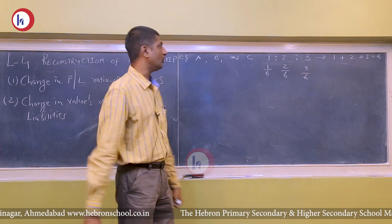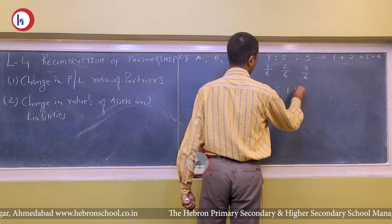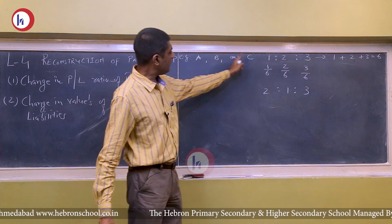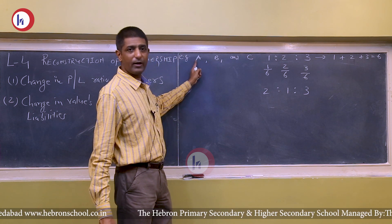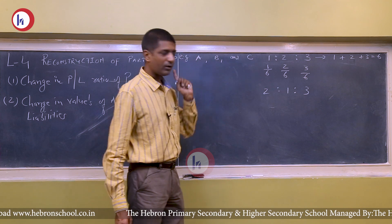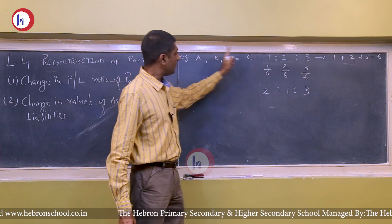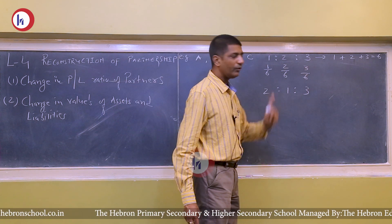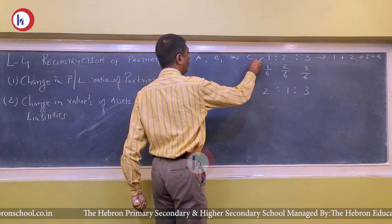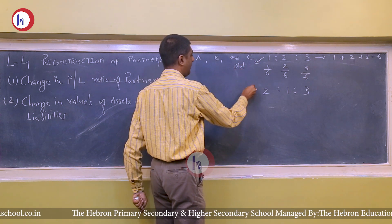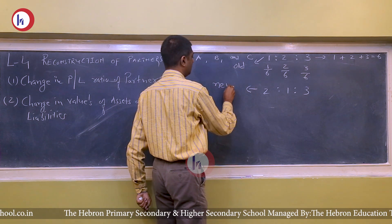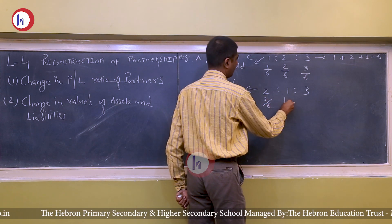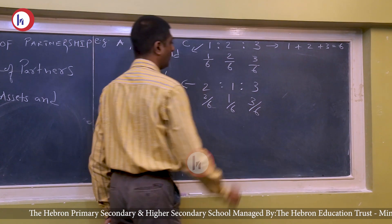Gradually after a few years, A, B, and C jointly decided to change this profit/loss ratio from 1:2:3 to a new ratio of 2:1:3. In the old ratio, A was getting 1/6, B was getting 2/6, and C was getting 3/6. In the new ratio, A gets 2/6, B gets 1/6, and C gets 3/6.